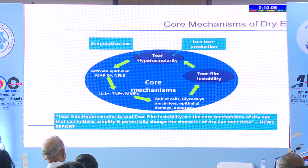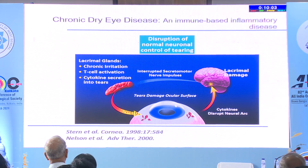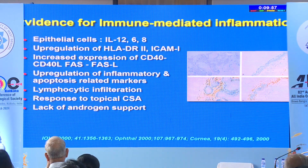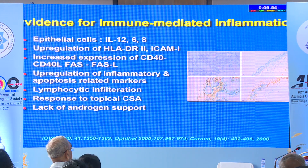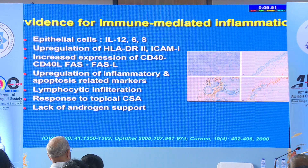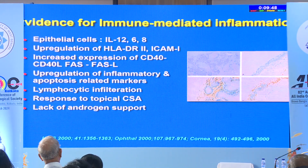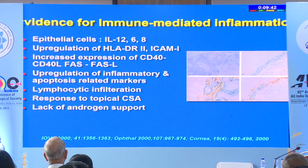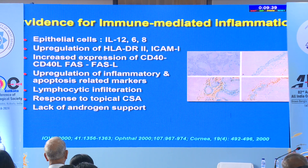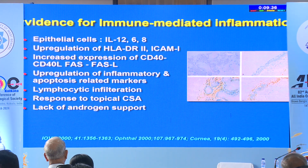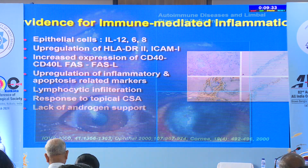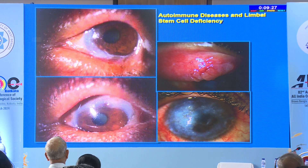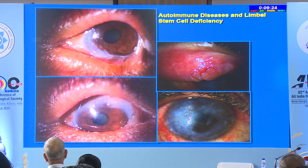Once inflammation sets in, it leads to activation of T-cells in the conjunctiva-associated lymphoid tissue. The surface epithelial cells start secreting pro-inflammatory cytokines and upregulate inflammatory genes, causing upregulation of all inflammatory markers. There is lymphocytic infiltration of the conjunctiva and glands, and also hormonal derangements.